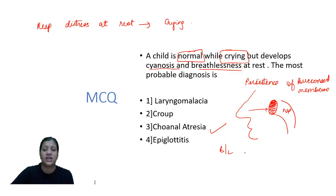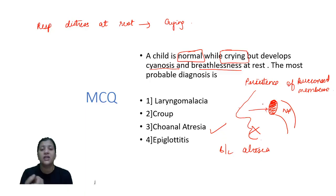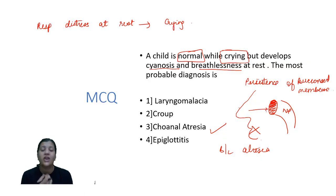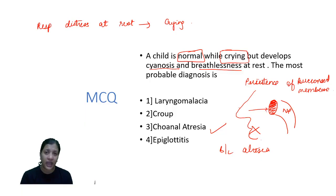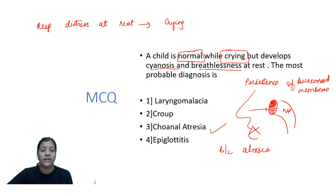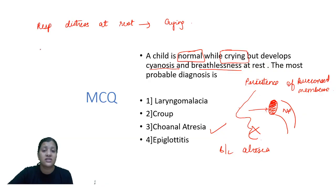When the child cries, the mouth opens and there is a negative intrathoracic pressure — air gets sucked in and the cyanosis or breathlessness disappears. So in choanal atresia you get cyanosis and breathlessness at rest which disappears on crying. The reverse happens in epiglottitis — there may be respiratory distress at rest but it worsens on crying because the epiglottis is already swollen due to inflammation, and further congestion causes worsening of stridor.